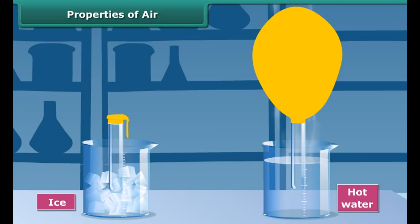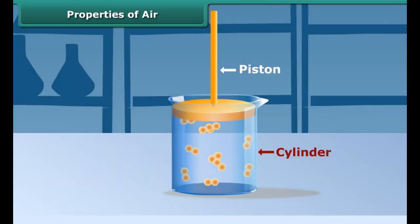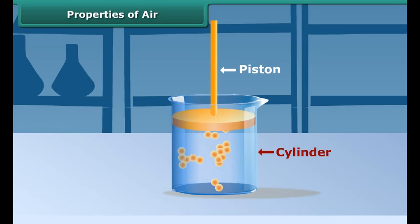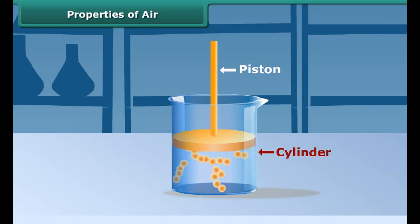This shows that air exerts pressure. Take a cylinder fitted with a piston and press the piston inward. You can compress the air inside the cylinder, so air can be compressed.